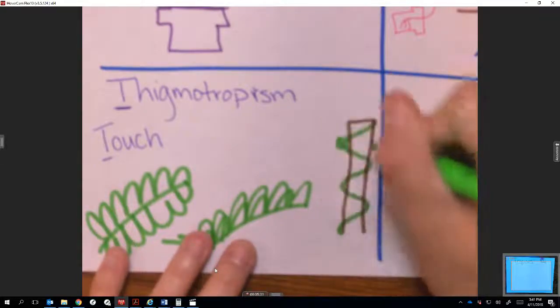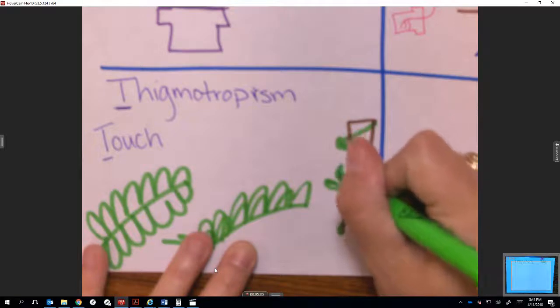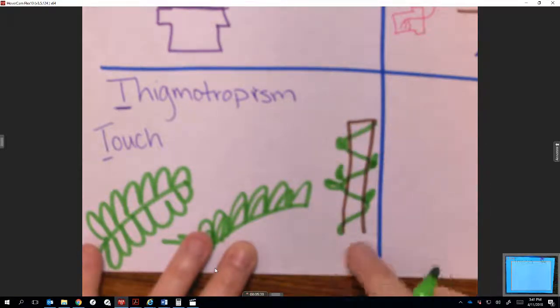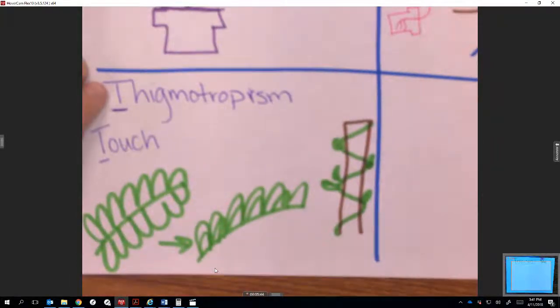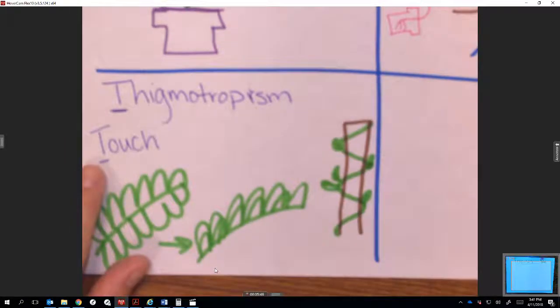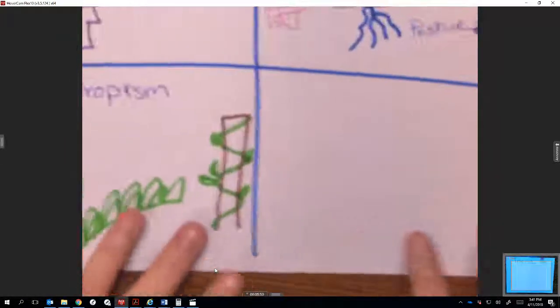When it touches the side, it causes those cells to curve so that it can actually attach to it and work its way up and be closer to the sunlight. Thigmotropism starts with a T, so does touch. Touch is an external stimulus for plants.